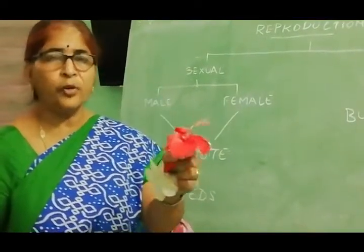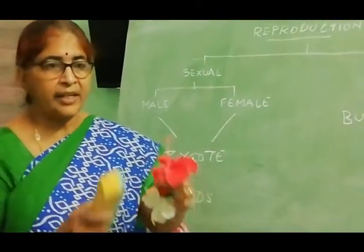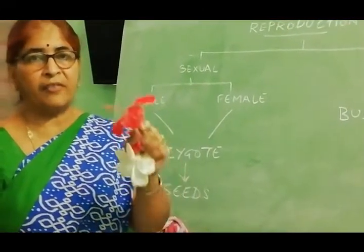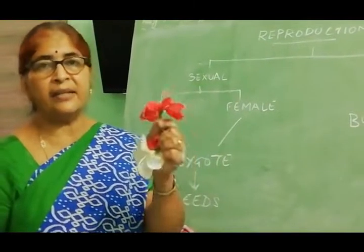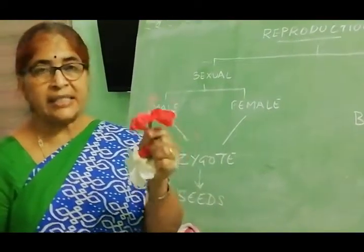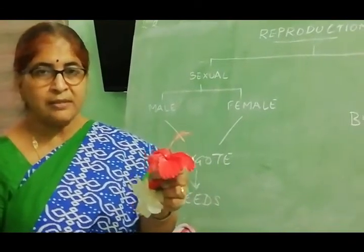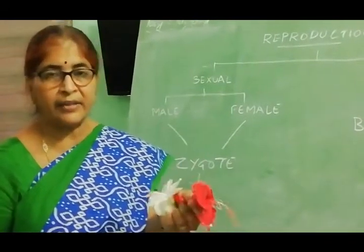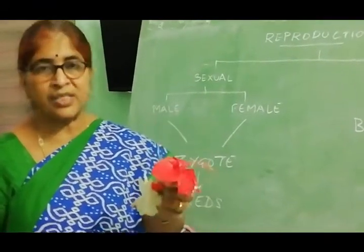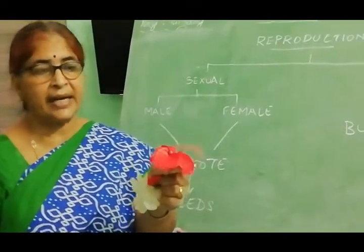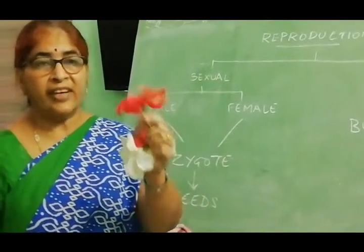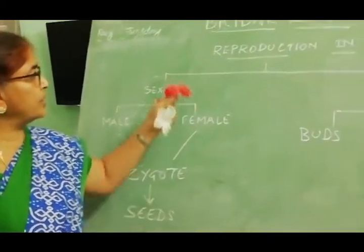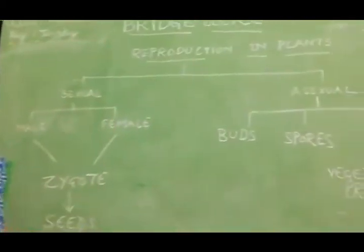Take a hibiscus flower and try to study each and every part. Try to understand the various parts. If you can see the ovules it is very good — try to dissect it, cut the flower, and try to understand the various parts of the flower which I have shown you today. This is about reproduction in plants.